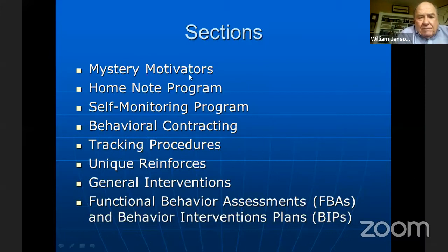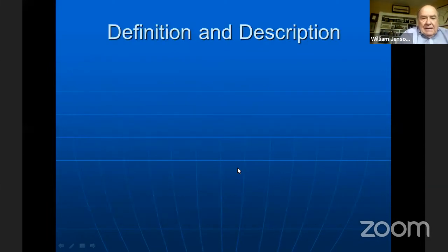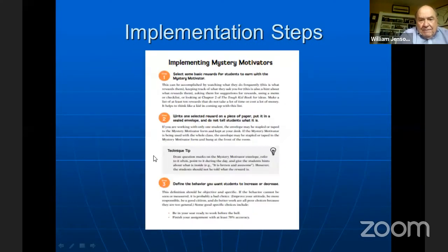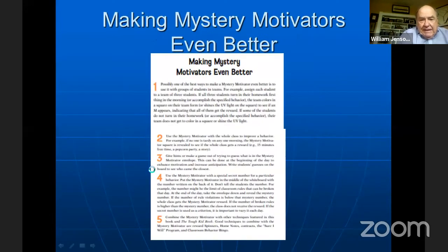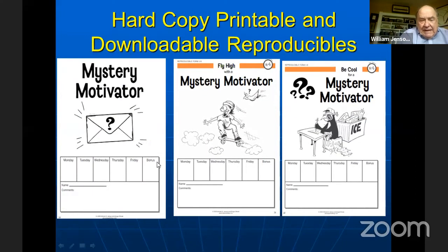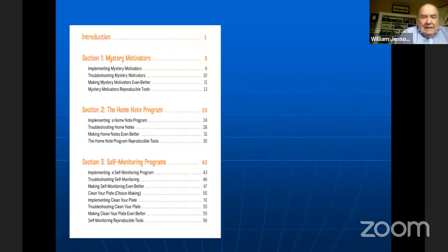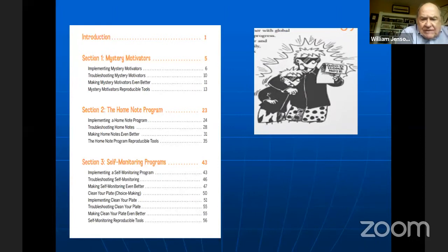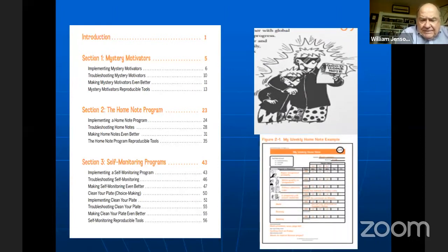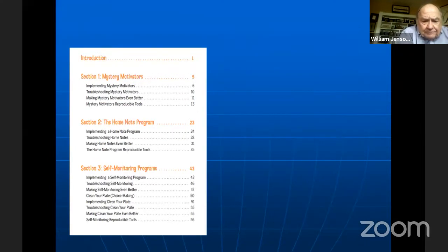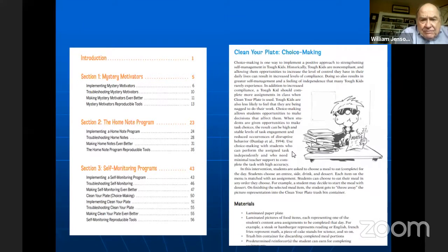Here's an example of the Toolbox structure: the mystery motivator section starts with a description, then walks through basic steps, troubleshooting, how to enhance it, and reproducible forms available in the back of the book or as downloads. The Toolbox sections include mystery motivators and home notes — with elementary and secondary templates — along with the same troubleshooting guidance to make them work well.